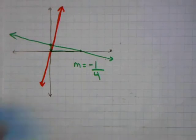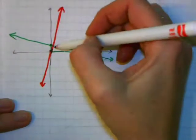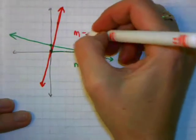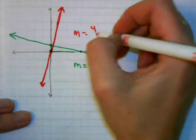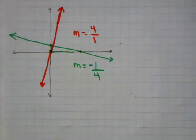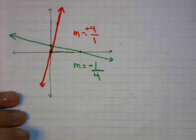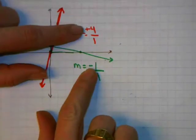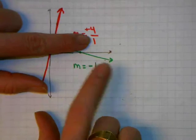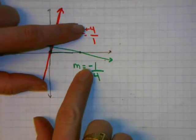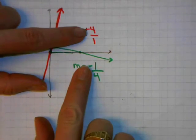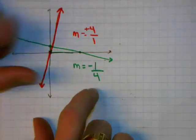Now let's take a look at the slope of the red line. I pick two points on the red line. The rise is 1, 2, 3, 4 — I go up 4 — and over 1. So the slope of the red line is positive 4 over 1. Comparing the slopes of these two perpendicular lines: one is negative 1 over 4 and one is positive 4 over 1. Their number parts are flipped upside down — reciprocals of each other — and they have opposite signs. This is true for all perpendicular lines.